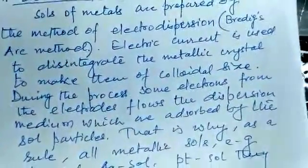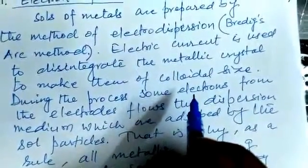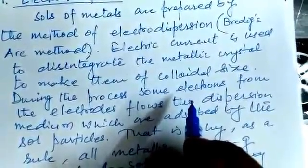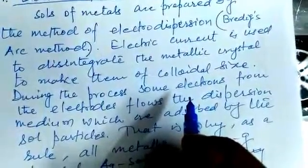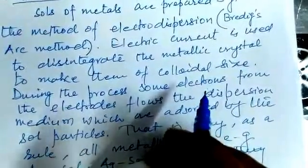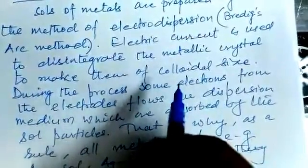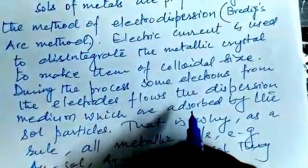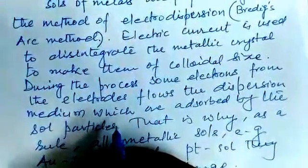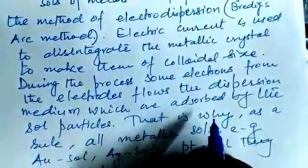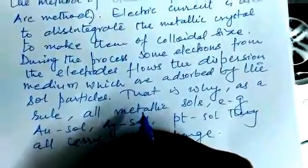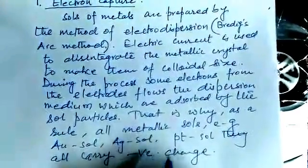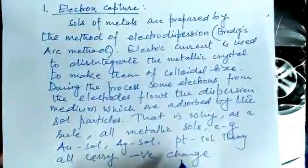During the process, some leakage of electrons from the electrodes to the dispersion medium takes place. Since we are using current — and current means flow of electrons — some electrons may flow to the dispersion medium, and these electrons are adsorbed by the metallic sol particles. That is why, as a rule, all metallic sols like gold sol, silver sol, and platinum sol carry negative charge.